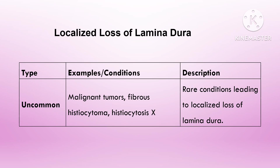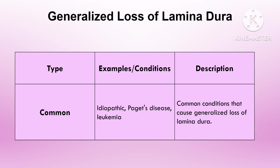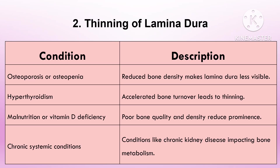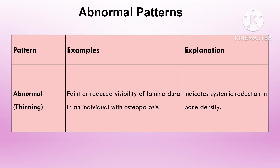Thinning or loss can also result from osteoporosis and hyperparathyroidism. In hyperparathyroidism, increased bone resorption due to hormonal imbalance results in a poorly defined, thinned, or lost lamina dura. A thinned or lost lamina dura indicates compromised bone health and may correlate with tooth mobility or systemic conditions.